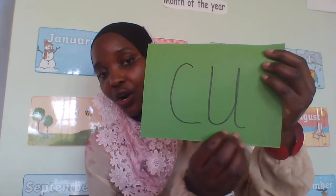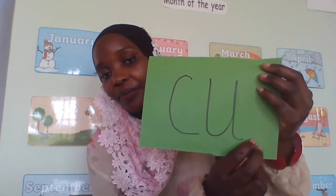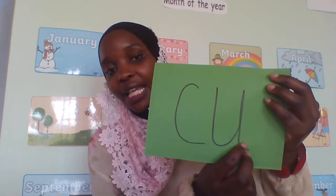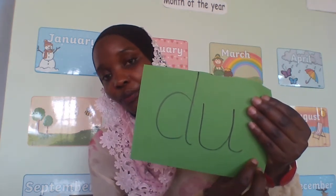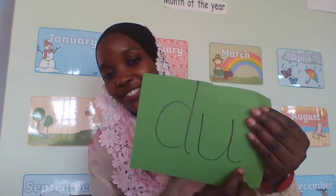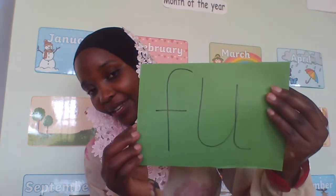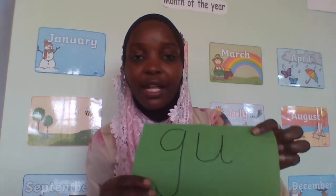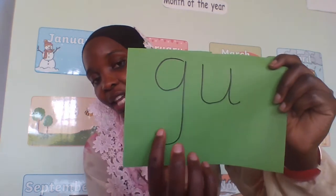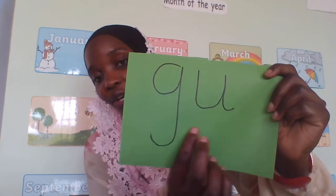How about this one? 'Ku'. Again, 'Ku'. In Uu, the syllable is 'Ku'. And this one here: 'Duu'. Again, 'Duu'. After Duu is 'Fu'. Again, 'Fuu'. How about this one? 'Guu'. Again, 'Guu'. After Guu is 'Huu'.